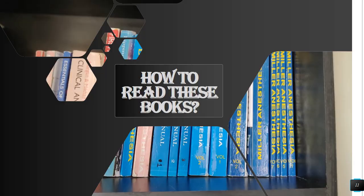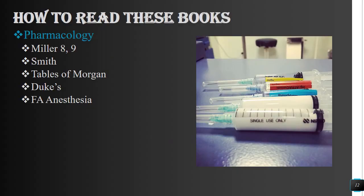For pharmacology, the best book is Miller 8th or 9th edition. The second good book is Smith — its best quality is simplicity, as it elaborates all pharmacology concepts very clearly. If you don't want to go to Miller and have no time, do Smith first, then study the pharmacology tables in Morgan, and then revise all these pharmacology concepts from Duke's Anesthesia Secrets and First Aid Anesthesia.